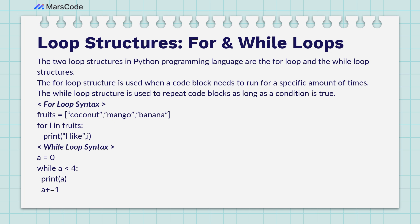Here's the for loop syntax. We create a list called fruits containing coconut, mango, and banana. We write the keyword for, then a variable — for example 'i' — then 'in' followed by the list name. You can also say 'for i in range(3)' when you want to repeat something three times, or 'for a in range(4)'. Here we use the for loop because we want to go through all the items in the list.